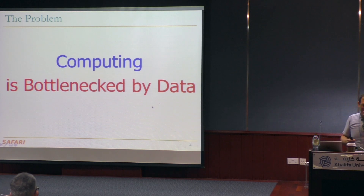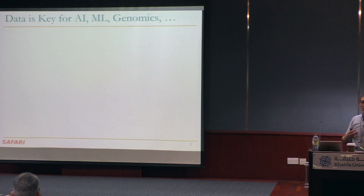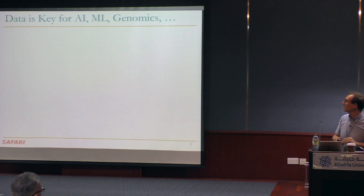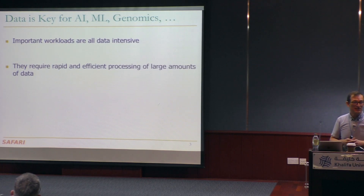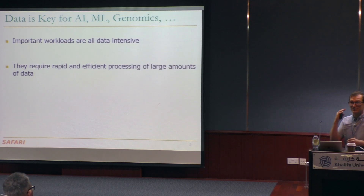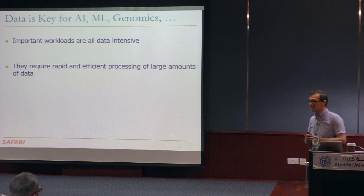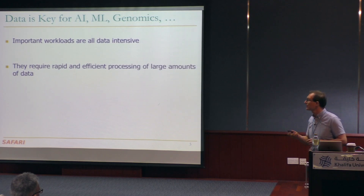The problem is computing today is bottlenecked by data. Data is key for all applications we're really interested in going forward — AI, machine learning, genomics. Important workloads are all data intensive. They require rapid and efficient real-time processing of large amounts of data, especially for decisions we'd like to make quickly. For health problems, you'd like to make decisions relatively quickly to cut the loop for treatments. Or for a self-driving or self-flying vehicle, you want to make decisions extremely quickly because the consequences may be disastrous otherwise.